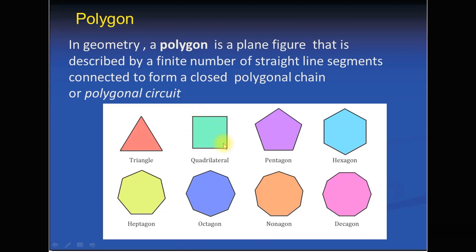This is a pentagon. The pentagon is that polygon in which there are five sides — side one, two, three, four, and five — and these five sides are connected to form a closed polygonal chain. This is a hexagon. A hexagon is that polygon in which there are six line segments: line segment number one, two, three, four, five, and six.